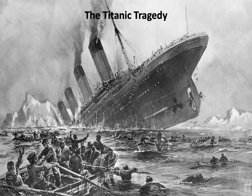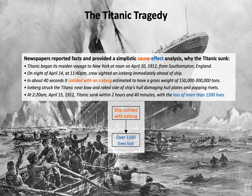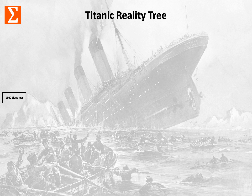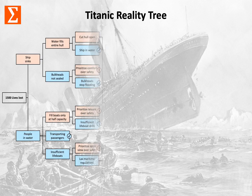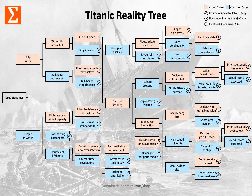A good example is the Titanic tragedy. Newspapers reported facts and provided a very simple cause-effect analysis of why the Titanic sunk. In essence, the ship collided with an iceberg and over 1,500 lives were lost. That's too simple — we can do better. We start with the problem: 1,500 lives were lost. And there are 48 causes. The orange are action causes and the blue are condition causes. When they come together, they create an effect. You can download this poster directly from the website at leanmap.com/shop — it's free.